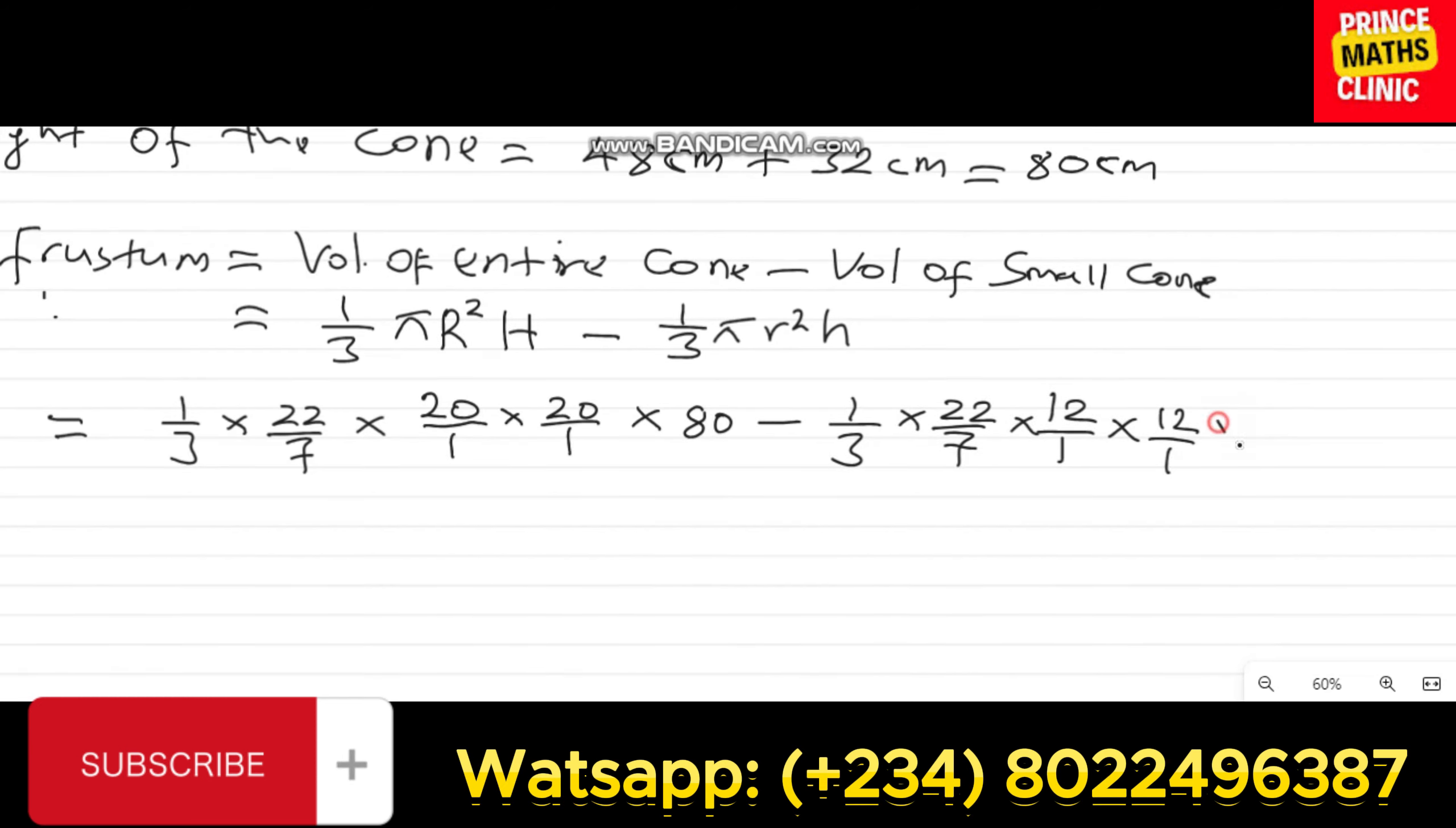This small radius is 12, so this becomes 12 over 1 times 12 over 1. Then our height there, the small height there as we have calculated is 48. That's the value of X that we got. So, punching your calculator, evaluating everything that we have here, the 1 over 3 times 22 over 7 times 20 times 80 over 1. Deploying everything I have here, I will have it as